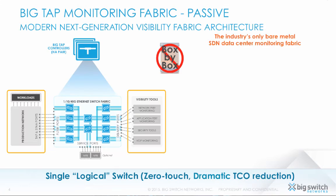Built using a next-generation architecture, BigTap provides clear and distinct advantages over other solutions. First of all, the switch fabric is centrally managed by a high-availability pair of BigTap SDN controllers. There is no box-by-box management. In fact, this fabric can be visualized as a single, logical, big switch.